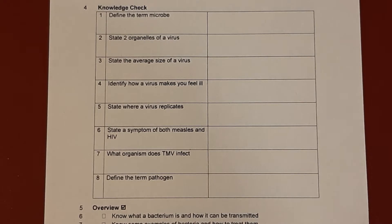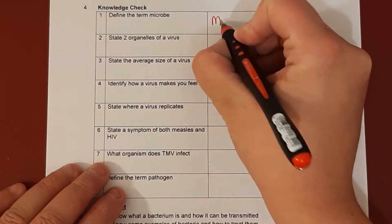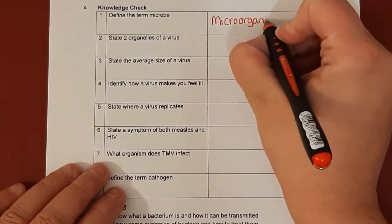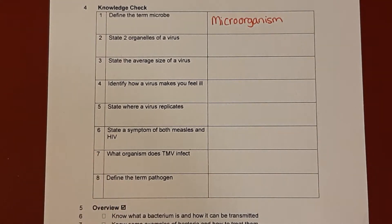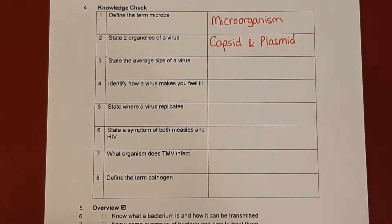Let's go through those then. Question 1: Define the term microbe. A microbe is a micro-organism. Question 2: State the two organelles of a virus. That would be the capsid and plasmid. Question 3: State the average size of a virus. A virus is approximately one one-thousandth of the size of a bacteria, or approximately 20 to 500 nanometres.